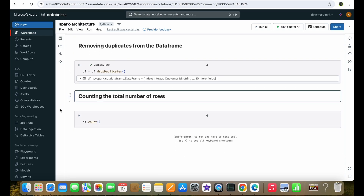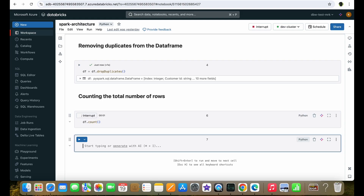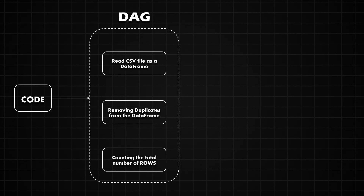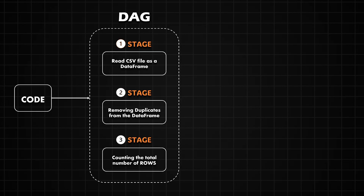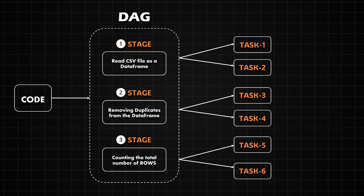Now let's see what happens when we run the final code, which counts the total number of records in the data frame after removing the duplicate records. Since the count operation is an action command, this is the point where Spark will execute the logical plan created in the previous steps. As part of this execution, the Driver Program breaks the DAG logical flow into multiple stages. For example, stage 1 can be reading the CSV file from storage, stage 2 can be removing the duplicates from the data frame, and stage 3 can be counting the total number of rows. Each of these stages is further divided into multiple tasks, and each task corresponds to a partition of the data. If the CSV file is split into two partitions, two tasks are created per stage — giving six tasks total to process all three stages.